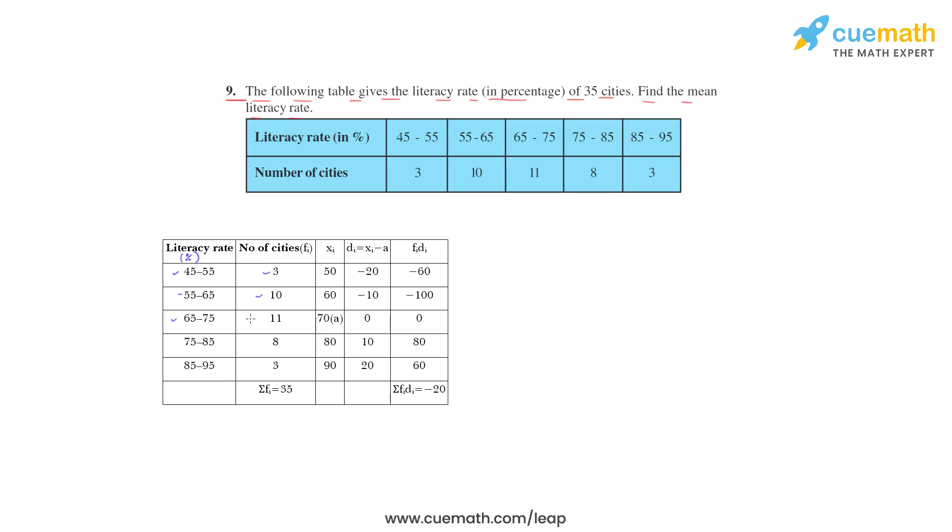65 to 75 percent, 11 cities; 75 to 85, 8 cities; and 85 to 95, three cities. The sum of all fi, that is sum of all the cities, is 35. Now we have to find xi. xi is upper limit plus lower limit divided by 2.